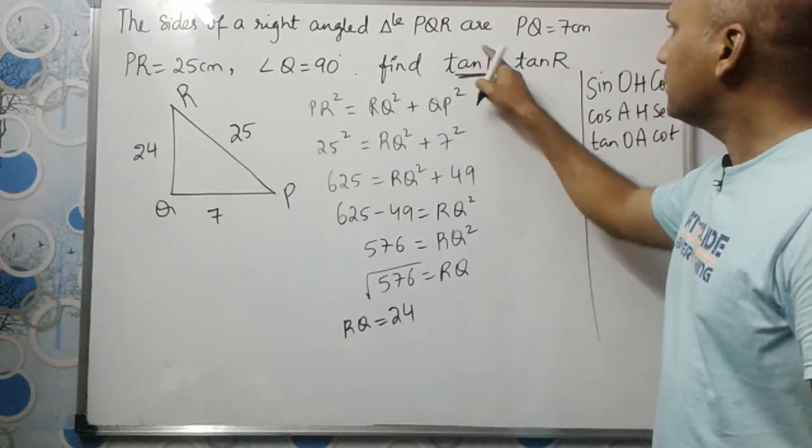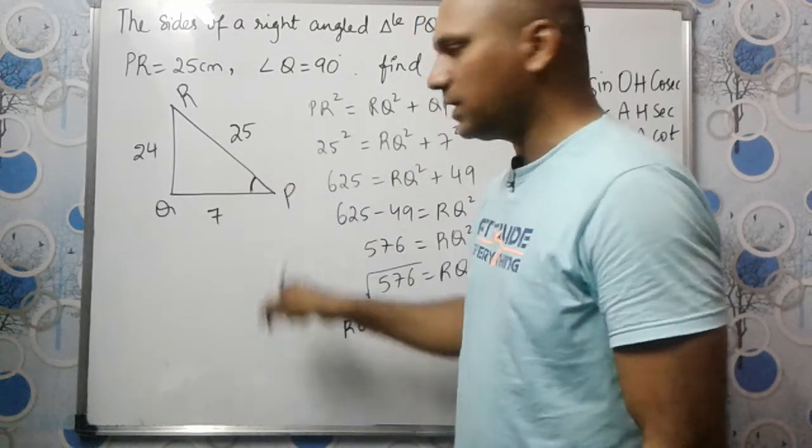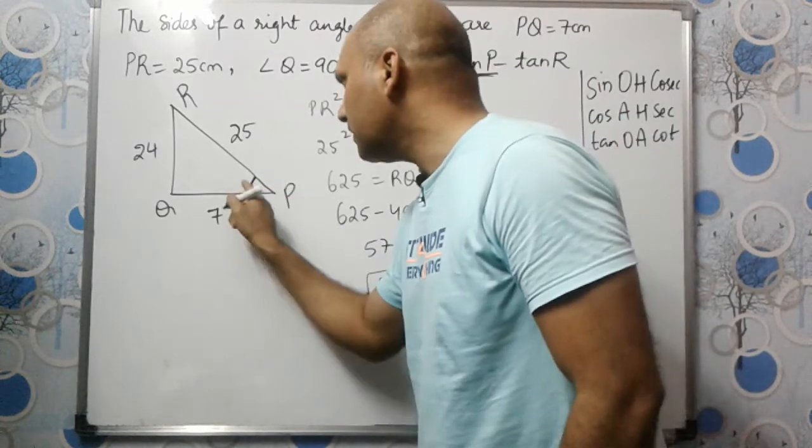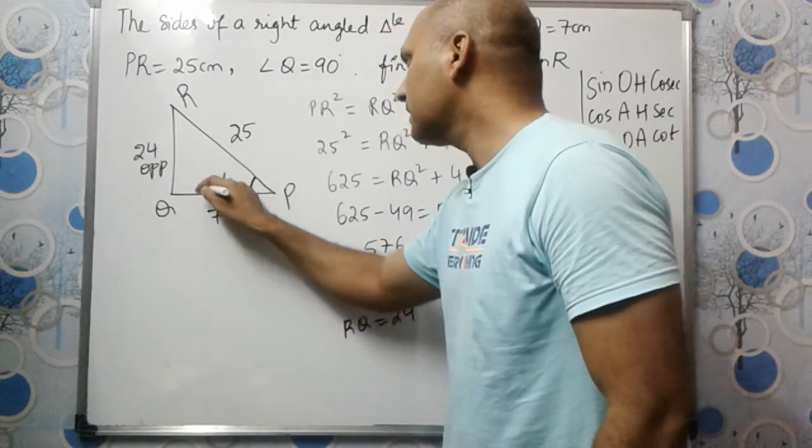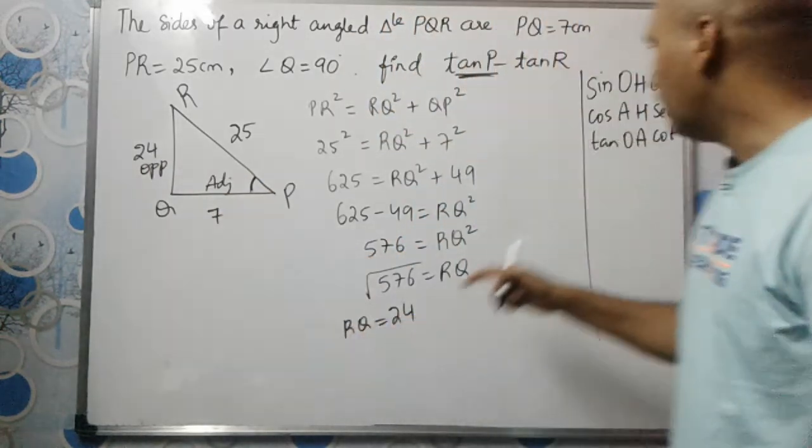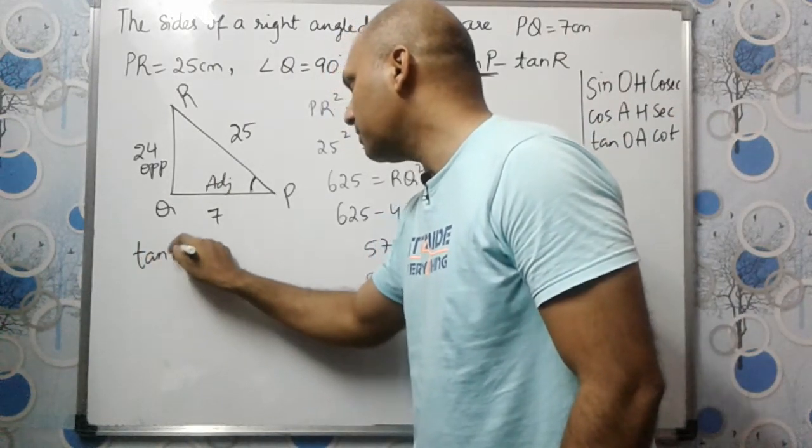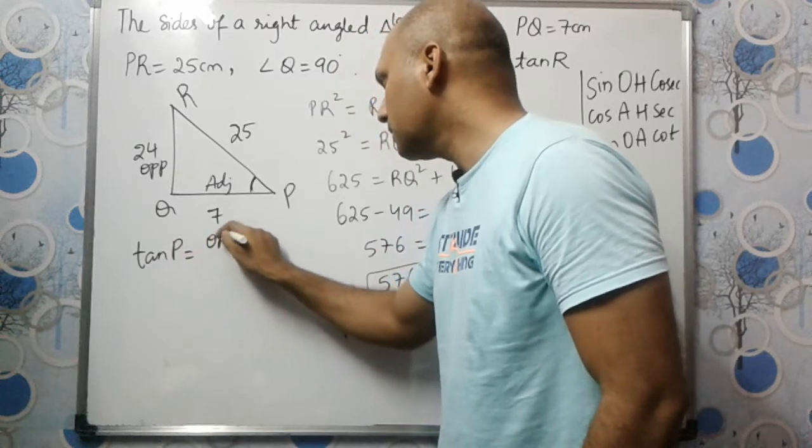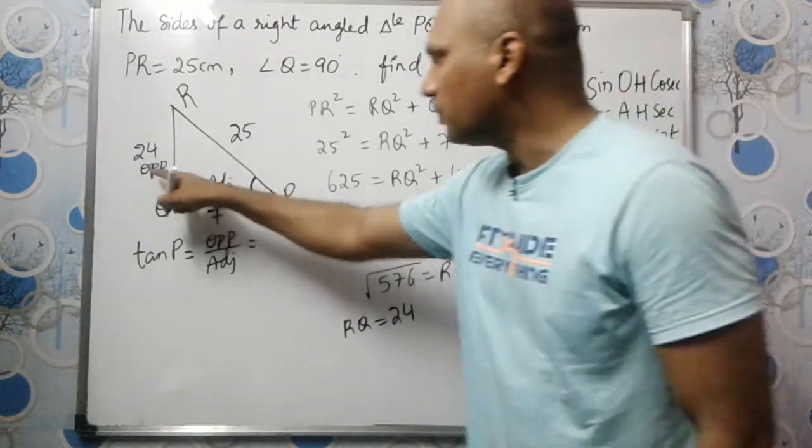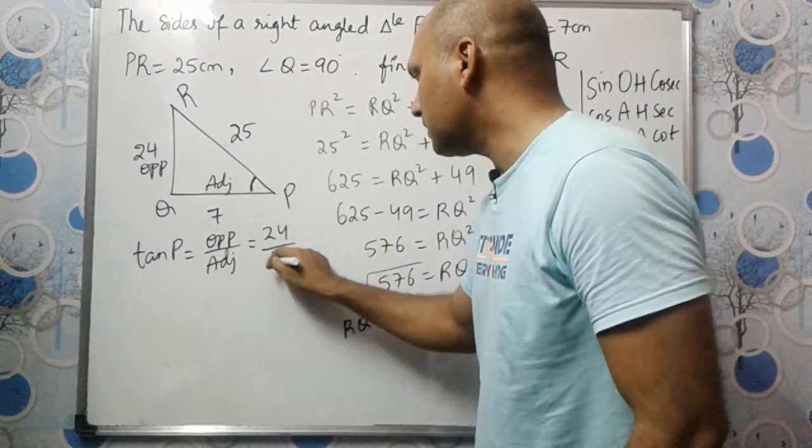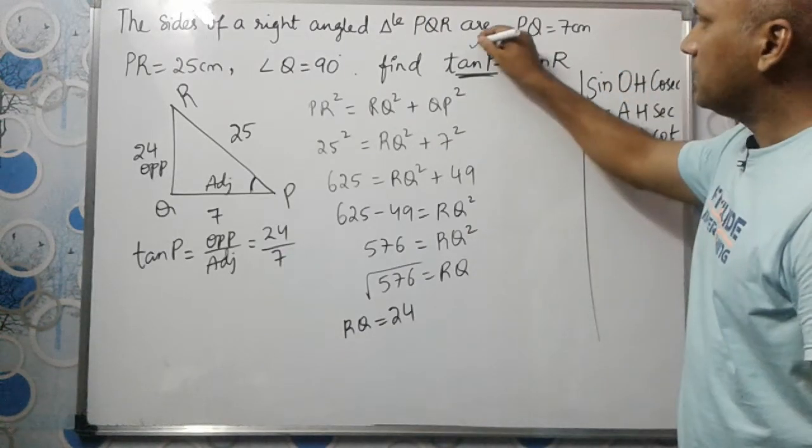We are finding tan P now. The angle here is P, so for angle P, opposite is 24 and adjacent is 7. So tan P is equal to opposite divided by adjacent. Opposite is 24, adjacent is 7, so this is 24 divided by 7.